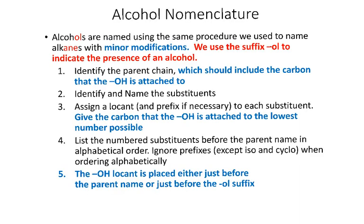In this video we're going to talk about the nomenclature for alcohols. This is very similar to the other nomenclature we've done so far, with a couple of additional rules specific to alcohols. We're going to use largely the same procedure; the big difference is we're going to use the suffix '-ol' to indicate the presence of an alcohol, just like we use '-ene' to indicate the presence of an alkene.